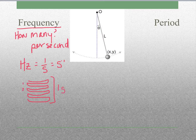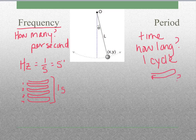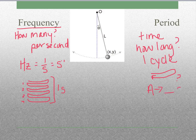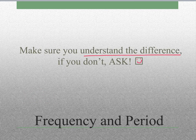Frequency is a countable thing — you could count 1, 2, 3, 4. Period has to do with time, so we're asking the question: how long? It's always the time for one cycle or one vibration — the time it takes to go from here to here and back. We give our answer in units of seconds, and that will never change. Please make sure you understand the difference; if you don't, you are going to really struggle in this and the next chapter.